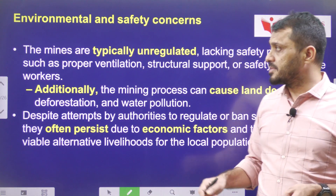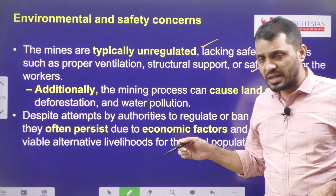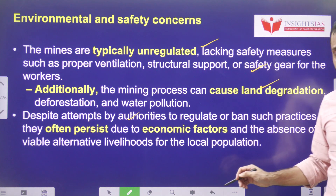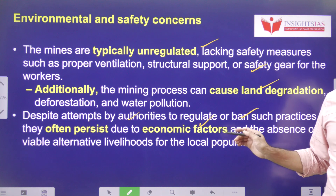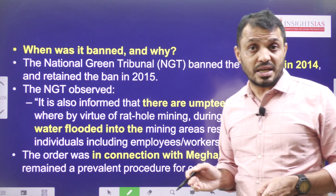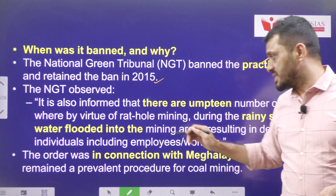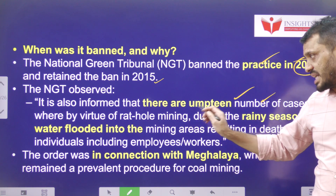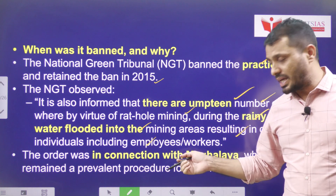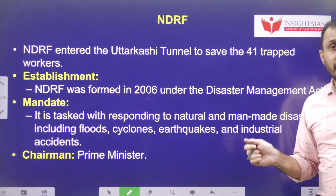Environmental and safety concerns regarding rat hole mining: it is typically unregulated and hazardous due to poor ventilation and lack of structural support. It may also lead to deforestation, land degradation, and water pollution. During the monsoon season it can cause flooding. Despite attempts by authorities to regulate or ban these practices, it remains prevalent due to limited livelihood options for people in this region. It was banned by the NGT in 2014. The NGT observed numerous cases where rat hole mining during the rainy season caused flooding in mining areas, resulting in deaths of workers and employees. This order was specifically in connection with Meghalaya, where this practice is most prevalent.